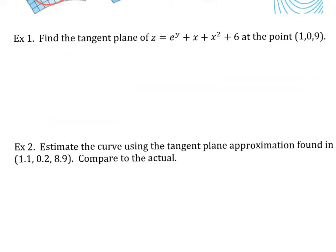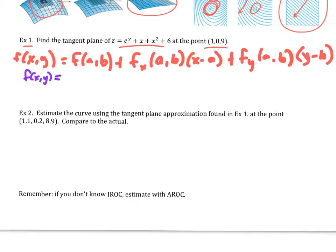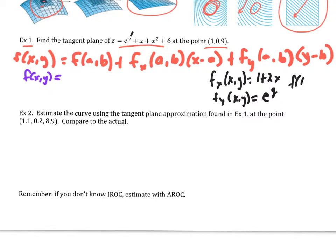Example one: we want to find the tangent plane of this function at the point (1, 0, 9). We're going to find the partial with respect to x, the partial with respect to y, and put this all together. Taking the partial with respect to x of xy times e to the y, the e to the y goes away and so it's just 1 plus 2x. Taking the partial with respect to y, treating y as the variable, that's going to be e to the y. Now plugging in, f of (1, 0) gives the value — plugging in 1, that would be 1 plus 1, which would be... actually f(1, 0) is 9.